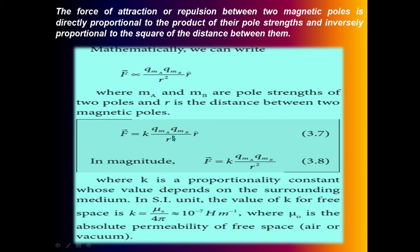In magnitude, the equation can be written as F(r) = k × (q_mA × q_mB) / r², where k is the proportionality constant whose value depends on the surrounding medium. In SI units, the value of k for free space is k = μ₀ / 4π, which is approximately 10⁻⁷ T·m/A. This is a very important value for your objective type questions and numerical problems.